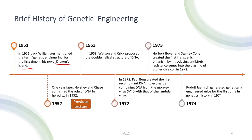In 1972, an important development took place. Paul Berg created the first recombinant DNA molecule by combining DNA from the monkey virus SV40 with that of the lambda virus. The following year, Herbert Boyer and Stanley Cohen created the first transgenic organism by introducing antibiotic resistant genes into the plasmid of E. coli. In 1974, Rudolph Janis generated genetically engineered mice for the first time in the history of genetics.